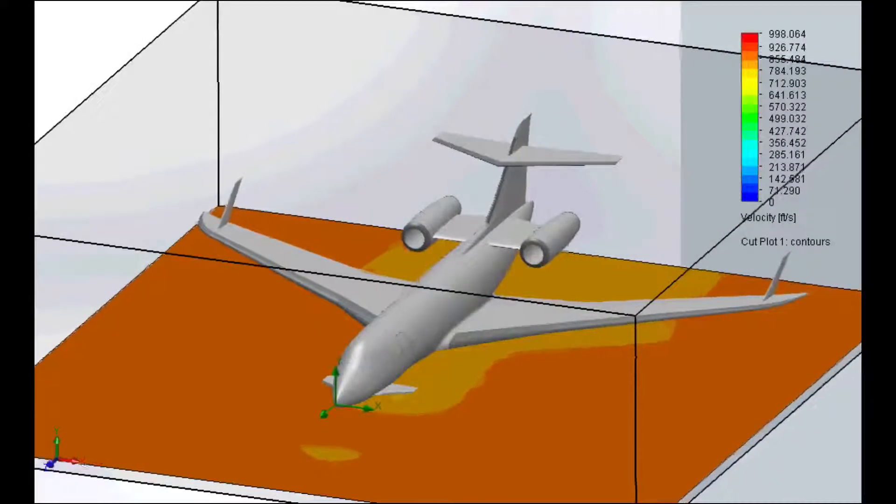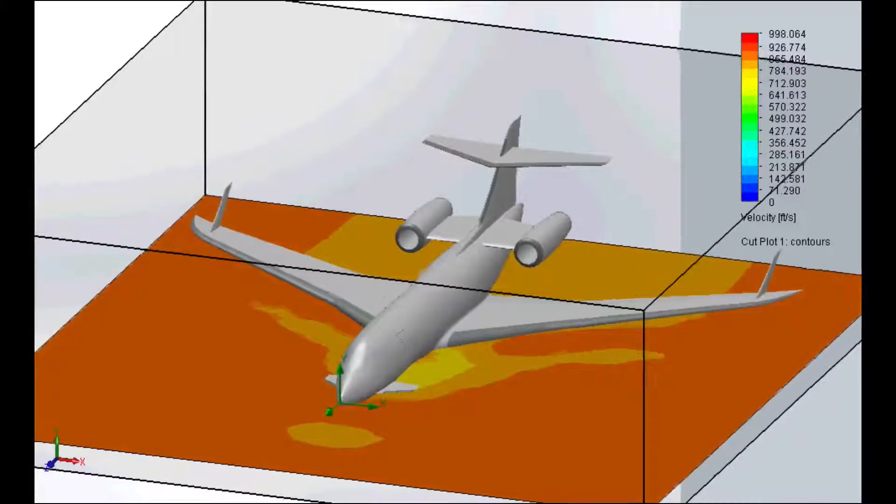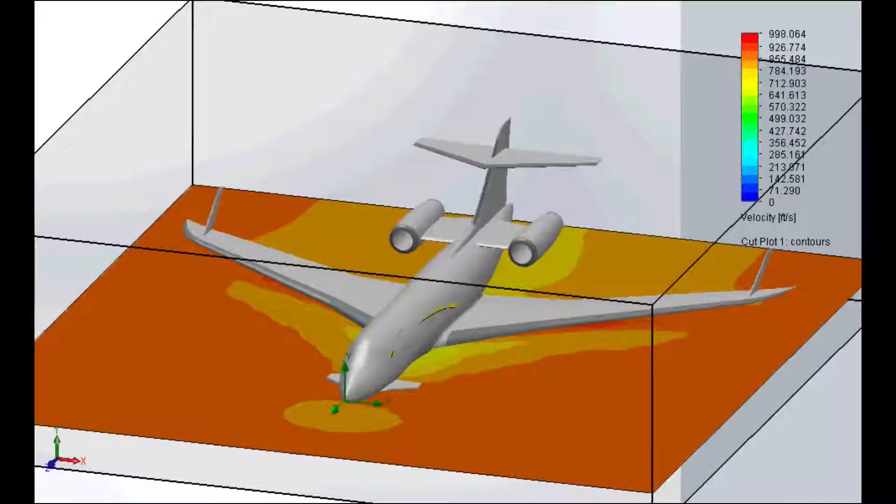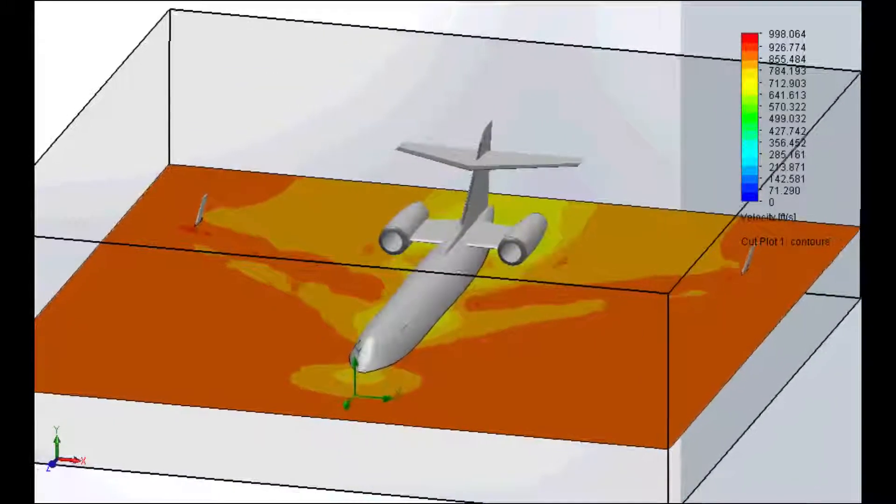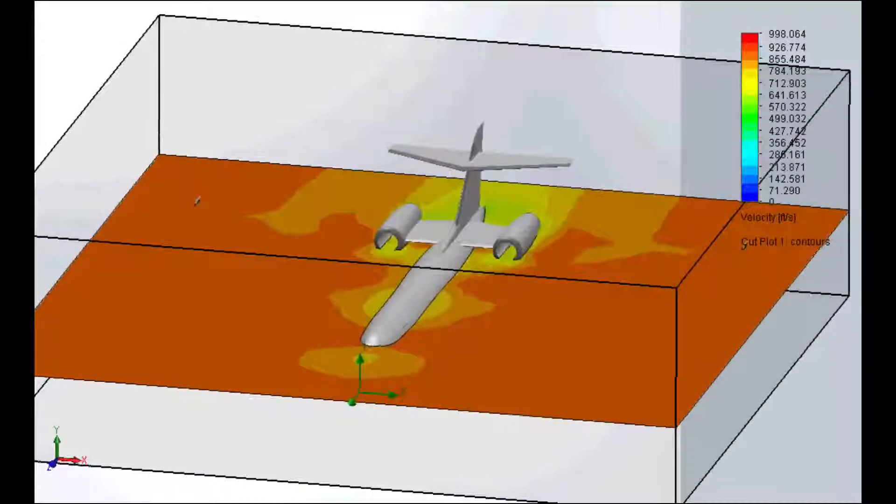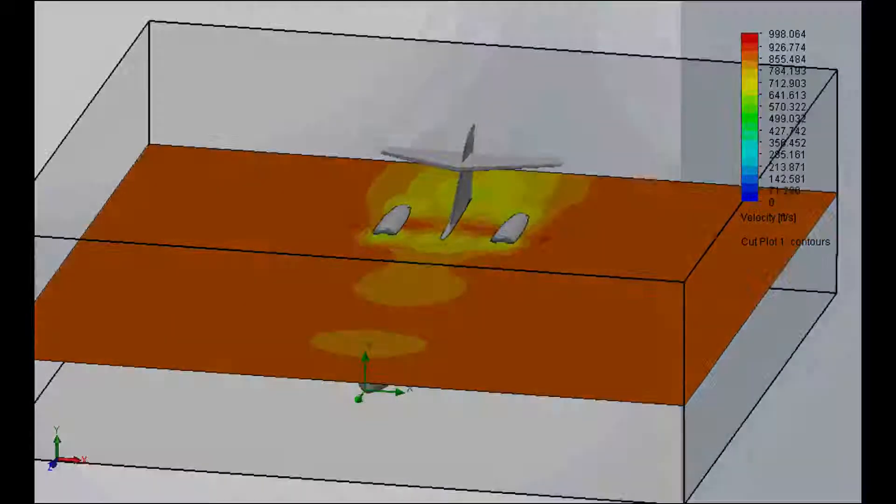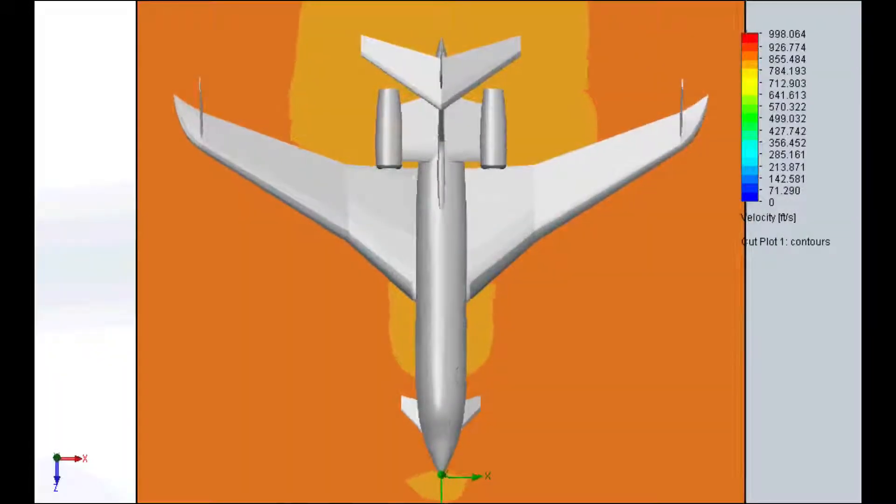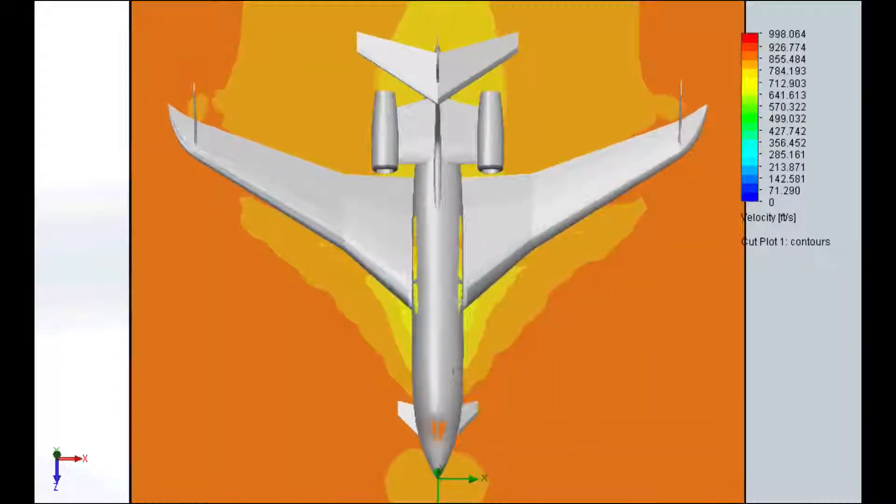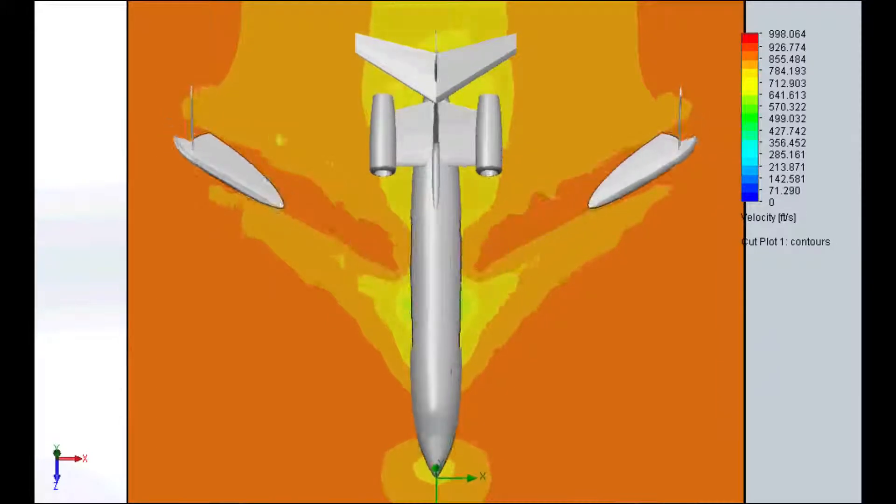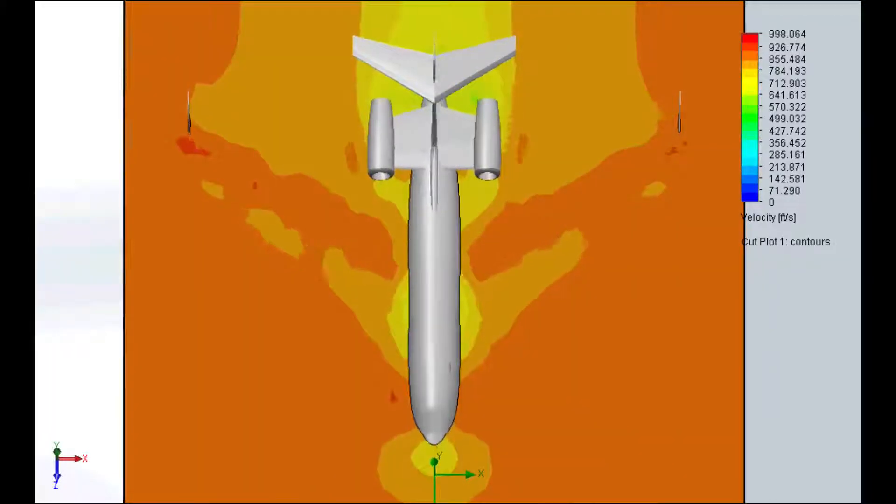This is the cut plot view moving from the bottom of the aircraft moving towards the top. And as you can tell, there's not nearly as much green as before. The green is roughly 650 feet per second or 440 miles per hour, which is a considerable drop of nearly 120 miles an hour.